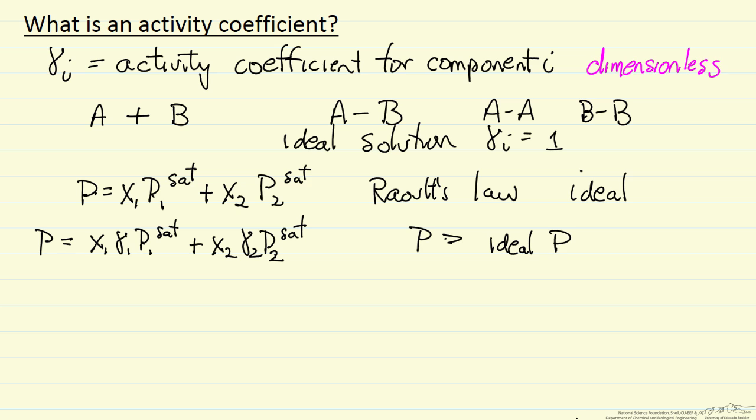In other words, greater than the Raoult's Law pressure, that would correspond to what we refer to as a positive deviation from Raoult's Law. And a positive deviation corresponds to making the pressure greater, which means the gamma i's are greater than one.